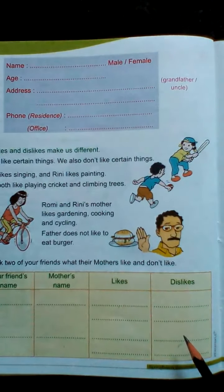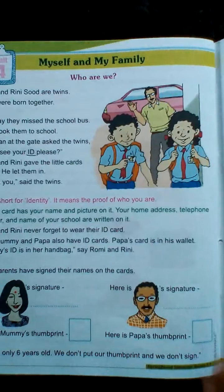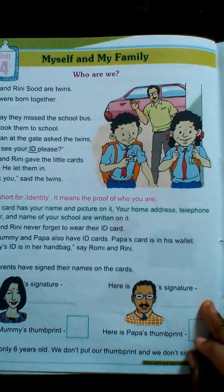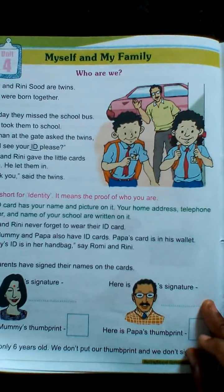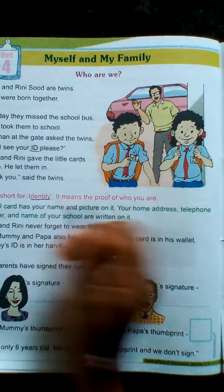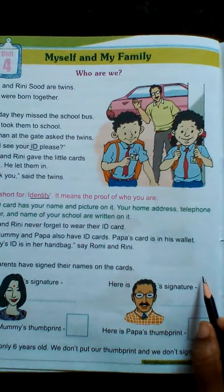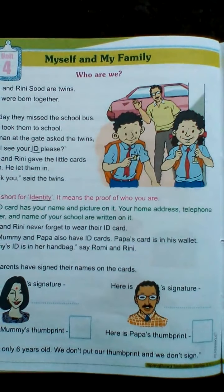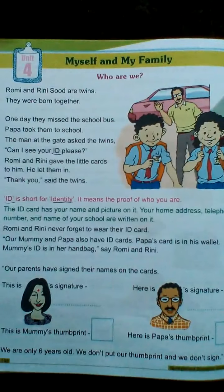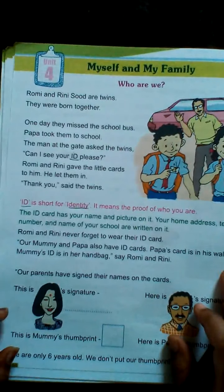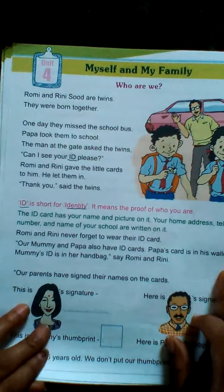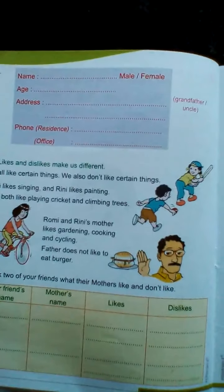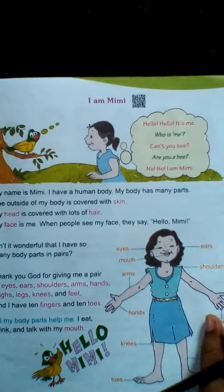I think you have all understood 'Myself and My Family — Who Are We.' ID is short for identity. The ID card has your name and picture on it, your home address, telephone number, and name of your school. This is the first part of Chapter 4. Next class we will continue with the second part. I am Mimi — read well, take care, bye!